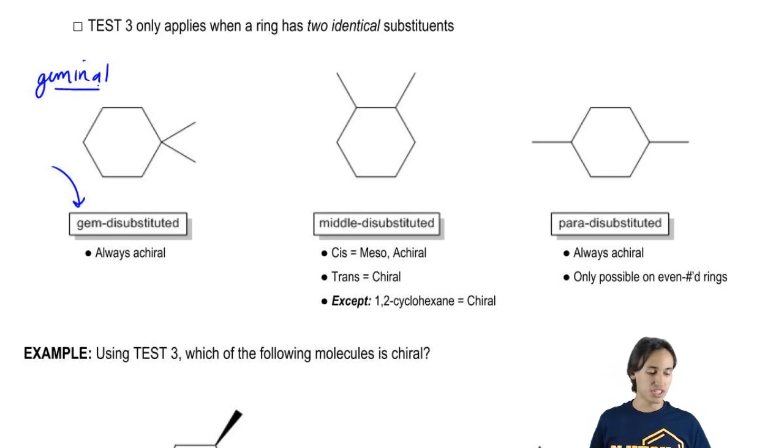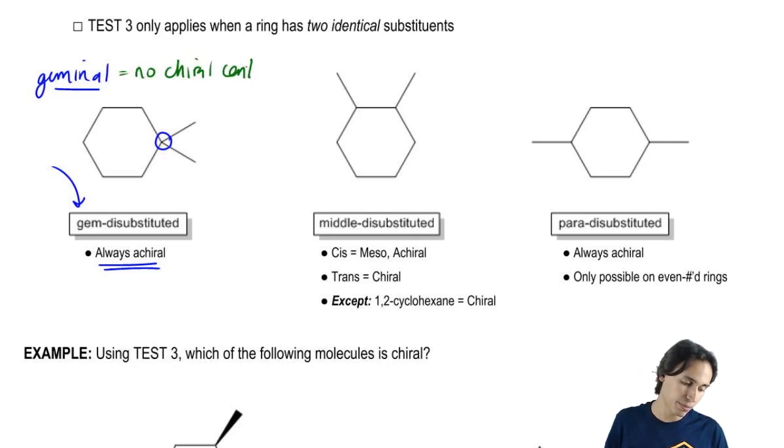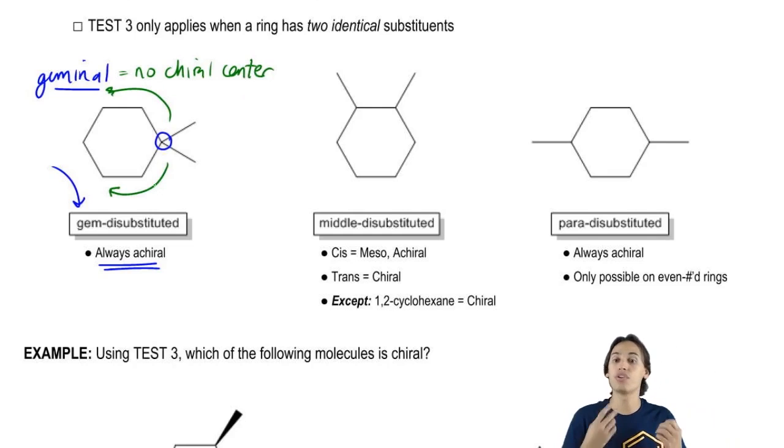So if you ever see geminal disubstituted, that is always achiral. You don't have to give it a test. You don't need to look for line of symmetry, nothing. It's just always going to be achiral. And the reason for that is that there's no chiral center. If you think about it, both of these R groups here are going to be exactly the same no matter what. So there's no chiral center, so this is always going to be achiral.